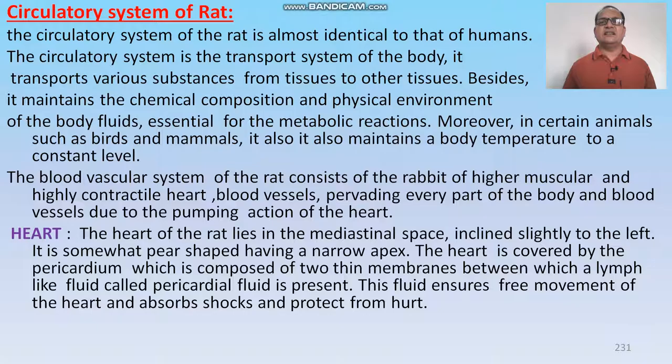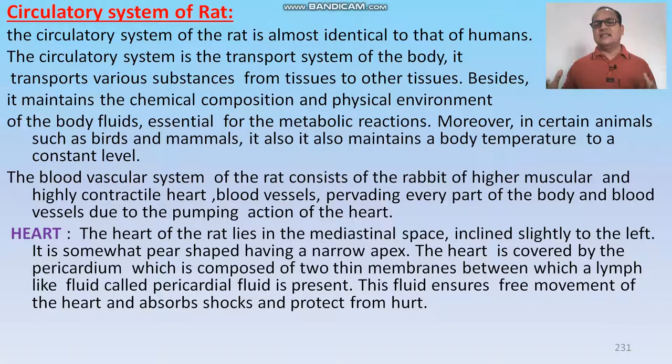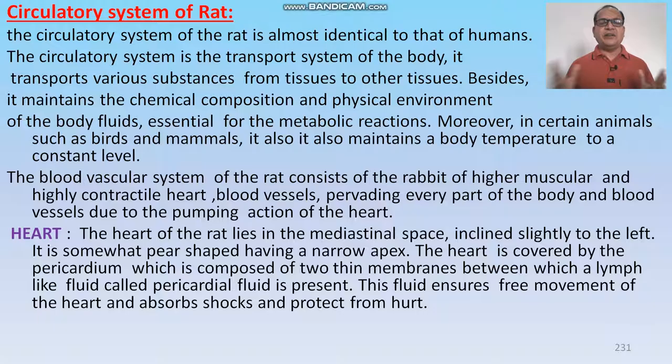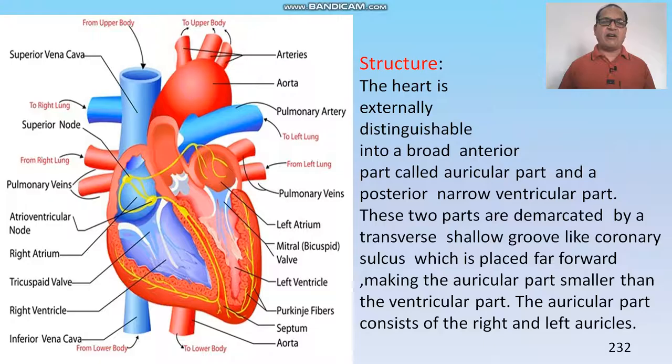Besides transport, the circulatory system maintains chemical and physical equilibrium and keeps body temperature constant. The most important part of the circulatory system is the heart. The heart lies in the mediastinal cavity, inclined slightly to the left, and is somewhat pear-shaped with a narrow apex. The heart is covered by the pericardium, composed of two thin membranes, between which a lymph-like pericardial fluid is filled. This pericardial fluid ensures free movement of the heart, absorbs shock, and protects the heart.